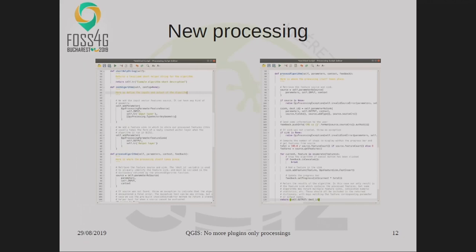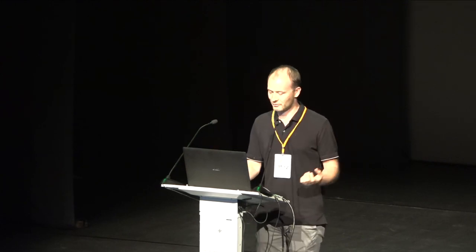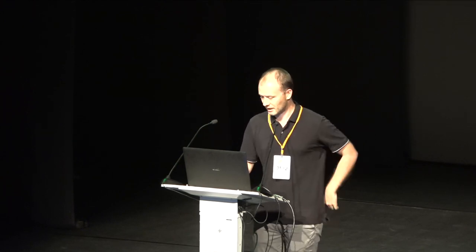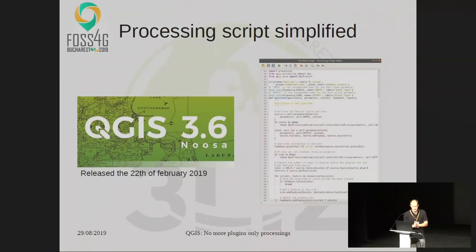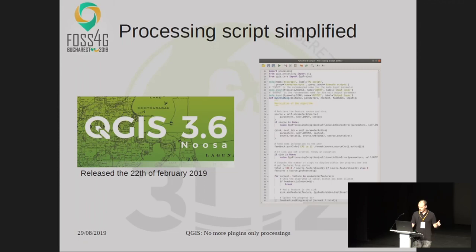This is important because now algorithms can be run in another thread — the QGIS interface is not blocked by processing. A long processing can run in the background, even in Python or with other providers like GDAL, Saga, Grass, and others. In QGIS 3.6, developers added easier ways to create script processing. For Pythonic developers, there are decorators. Now you can just create a function — it's your algorithm. With decorators you can specify name, input, and output. All this is available in the documentation made by the developers.